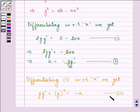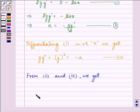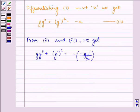From equations two and three, we get yy'' + (y')² equals, now in place of a we will substitute the value -(-yy'/x), which equals yy'/x.